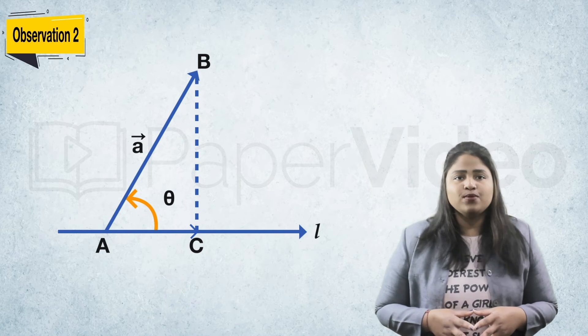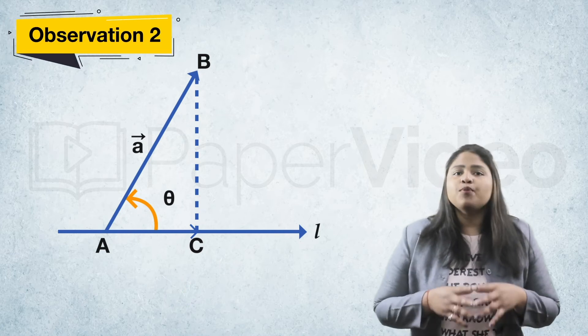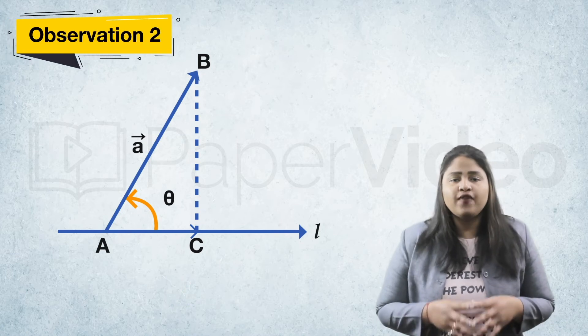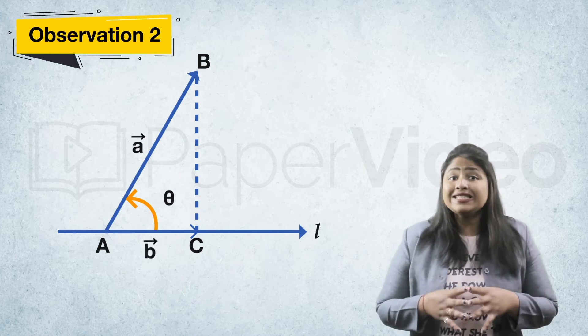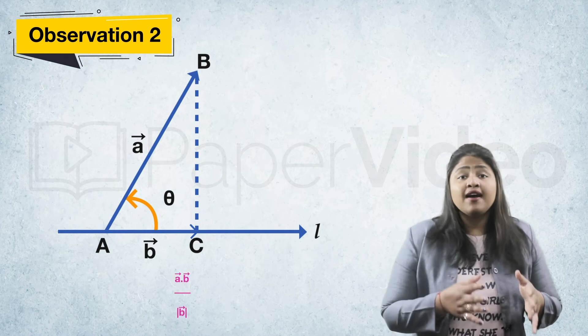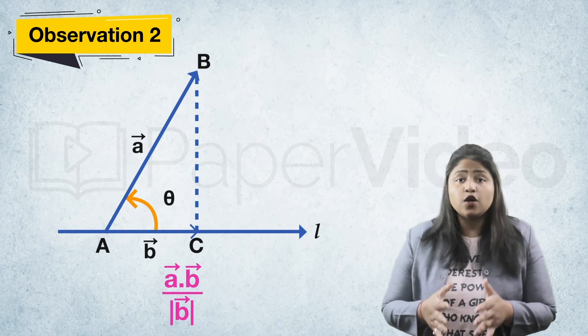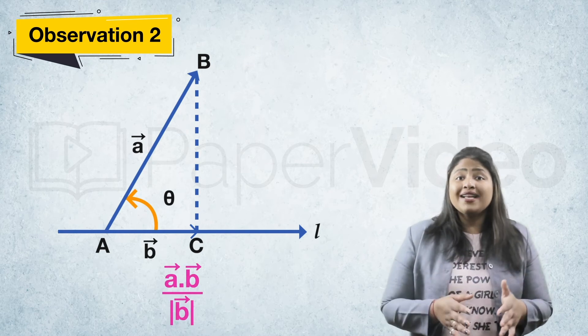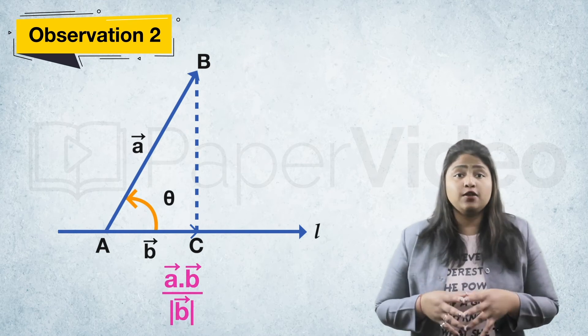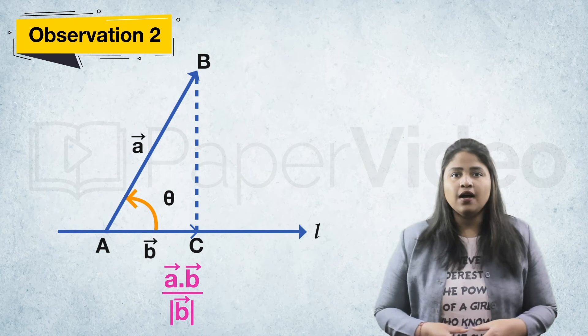According to the second observation, the projection of vector A on vector B is given by vector A dot vector B, divided by the magnitude of vector B.